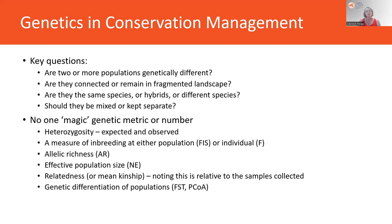As covered in module one, there's no single magic genetic metric for conservation management. You need to understand heterozygosity — expected and observed genetic diversity — a measure of inbreeding at the population or individual level, allelic richness, effective population size, relatedness or mean kinship (noting this is relative to where you sampled individuals — whether a family group or across the range), and genetic differentiation via FST or PCoA plots.